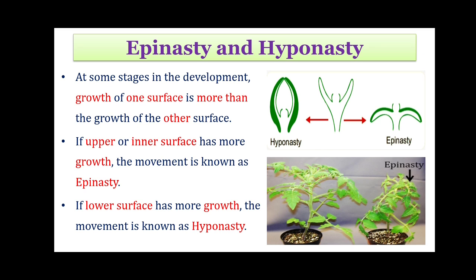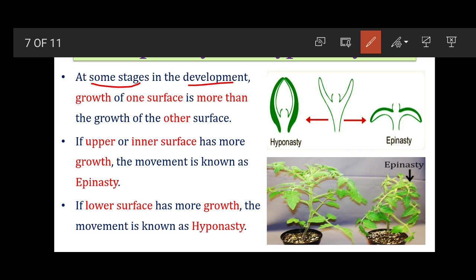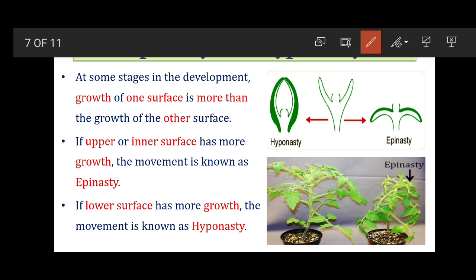Now let's talk about epinastic and hyponastic movements. 'Epi' means upon and 'hypo' means below. At some stages of development, growth may occur more at one surface than another. When growth occurs at the upper or inner surface it is called epinastic movement, but when growth occurs at the lower surface it is called hyponastic movement. In a bifacial structure, when growth is more on the lower surface, it exerts pressure from the underside upward, so the structure becomes upright — this is hyponastic movement.